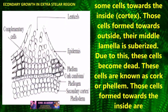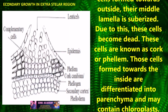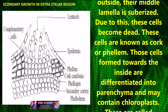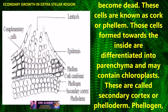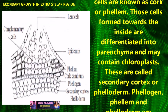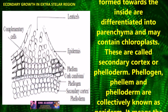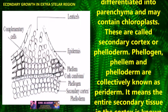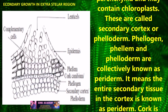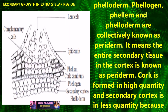These dead cells are known as cork or phellem. The cells formed towards the inside differentiate into parenchyma and may contain chloroplasts. These are called secondary cortex or phelloderm. Phelloderm, phellogen, and phellem are collectively known as periderm. This means the entire secondary tissue in the cortex is known as periderm.